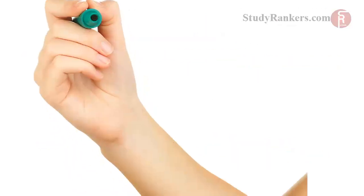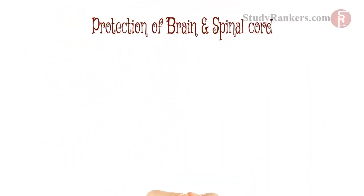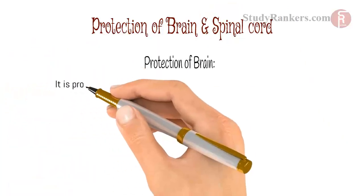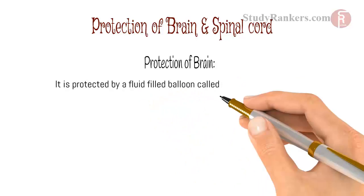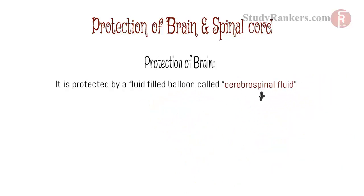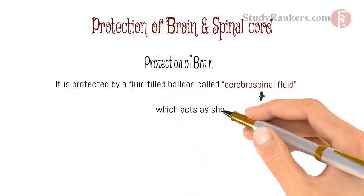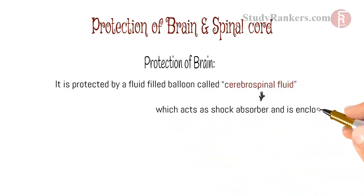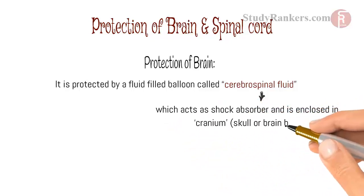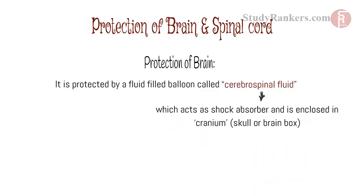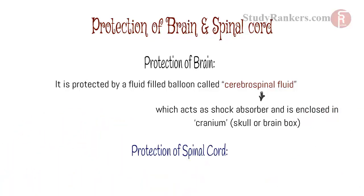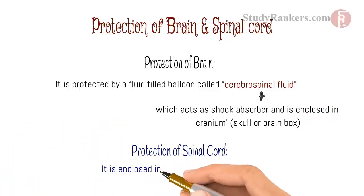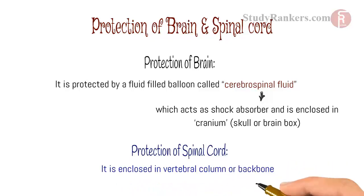Protection of brain and spinal cord: The brain is protected by a fluid-filled balloon called cerebrospinal fluid, which acts as a shock absorber, and is enclosed in the cranium, also known as the skull or brain box. The spinal cord is enclosed in the vertebral column or backbone.